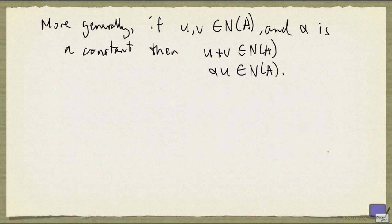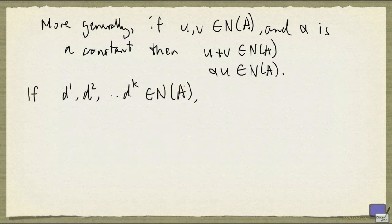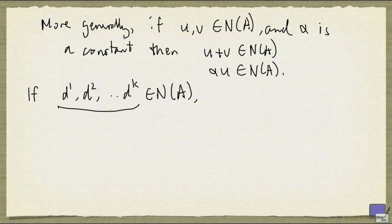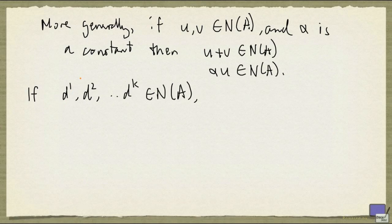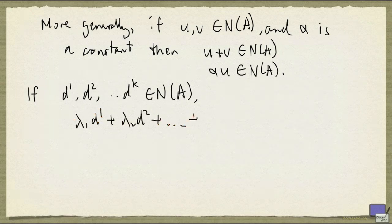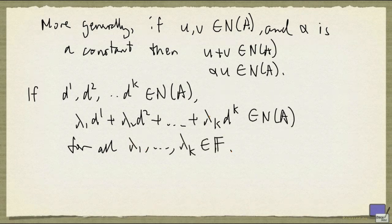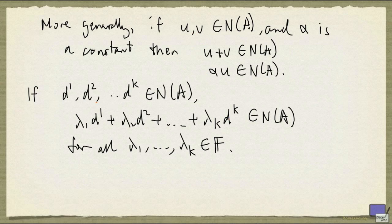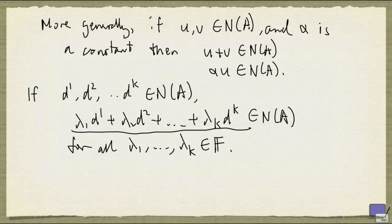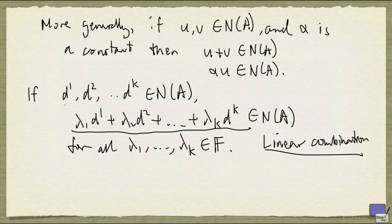You can extend this even further and say the following. If someone gives you k tuples from N(A), so d1 up to dk, where the superscripts do not mean powers but are just a way of indexing, then lambda 1 d1 plus lambda 2 d2 plus all the way to lambda k dk is going to be in N(A) as well for all lambda in F. So you can extend these two facts to something that says this. Now something that looks like this is called a linear combination of these tuples. So this, lambda 1 d1 up to lambda k dk, is a linear combination of the tuples d1 up to dk.